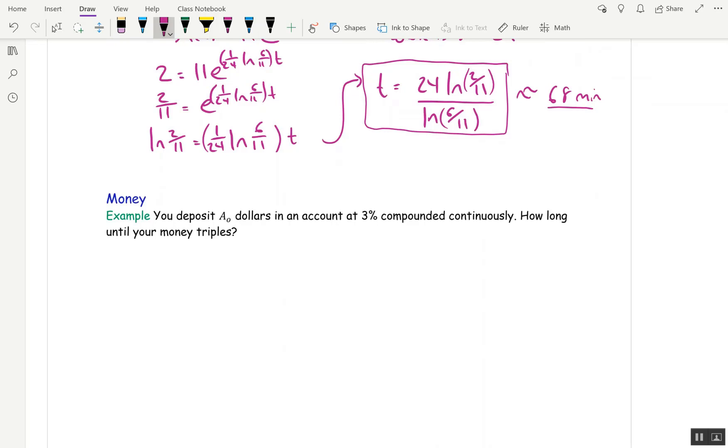And again, your book changes up the letters, but I'm going to keep it all A is A₀ E to the, now R is interest rate, but I'll just keep calling it T, but R is the interest rate. So, 3% compounded continuously is K equal 0.03 because everything has to be a decimal, not a percent.